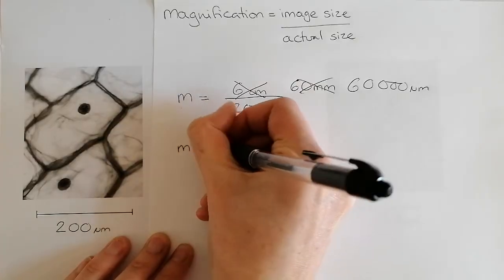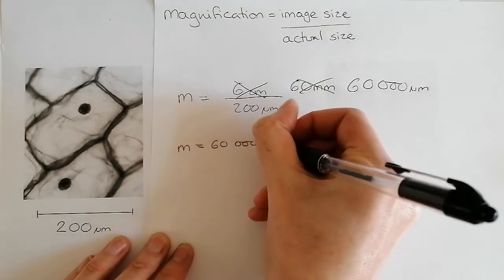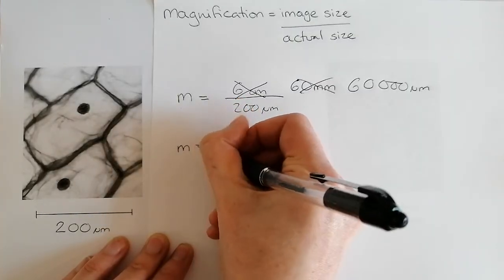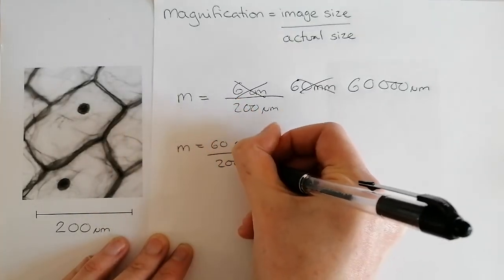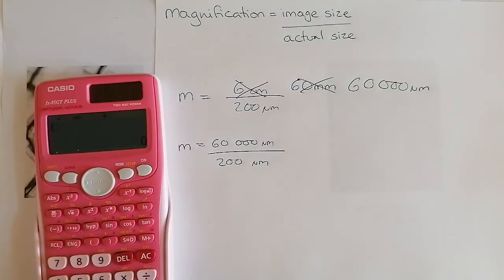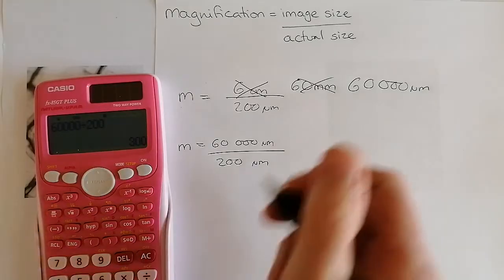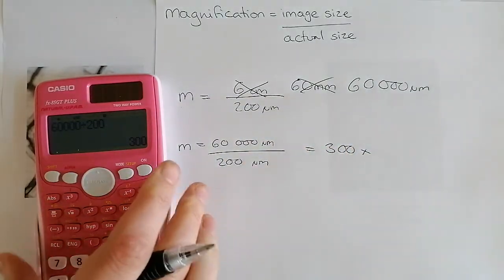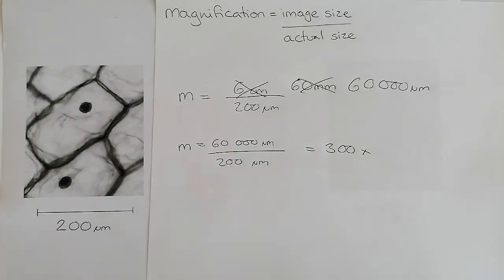Magnification. 60,000 micrometers. Always put your unit on. By 200 micrometers. Again, some of you won't really need to be doing this on a calculator, but some of you will. Well, 60,000 divided by 200 gives us 300 times bigger. So a magnification of 300 times.